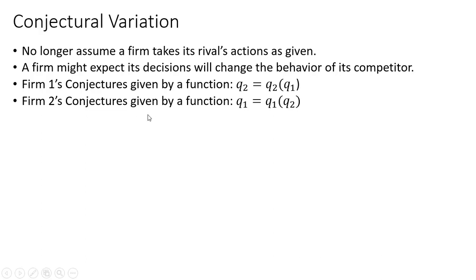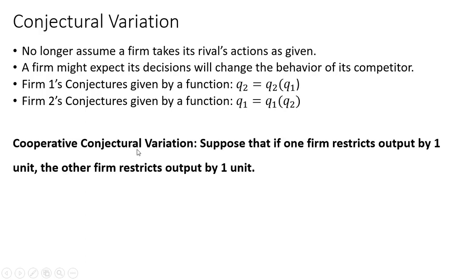Firm 2's conjectures look like this, again given by a function. In this video we're going to look at cooperative conjectural variations. Suppose that if one firm restricts output by one unit, the other firm restricts output by one unit.